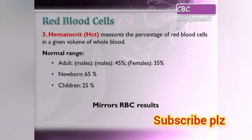The third component is hematocrit (HCT), which measures the percentage of red blood cells in a given volume of whole blood. Normal range: adult male 45%, female 35%, newborn 65%, and children 25%. These are the measured RBC results.